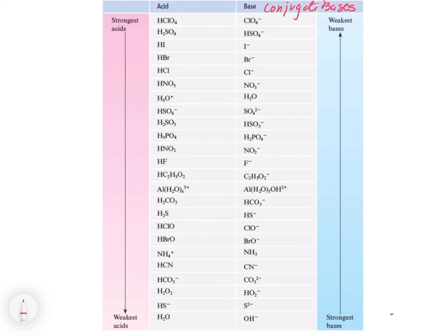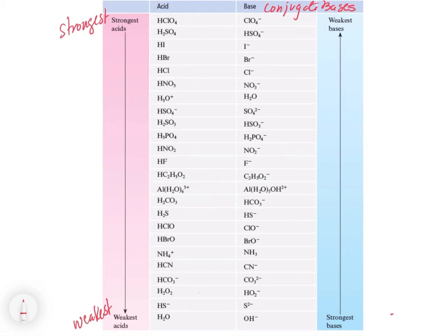These are the conjugate bases of those acids. You'll notice that with perchloric acid, we have the protonated form — perchloric acid — and then on the right hand side we have the base form, which is the chlorate anion, and that is the deprotonated form. These are conjugate acid-base pairs. What we notice is at the top here we have the strongest acids, and down at the bottom we have the weakest.